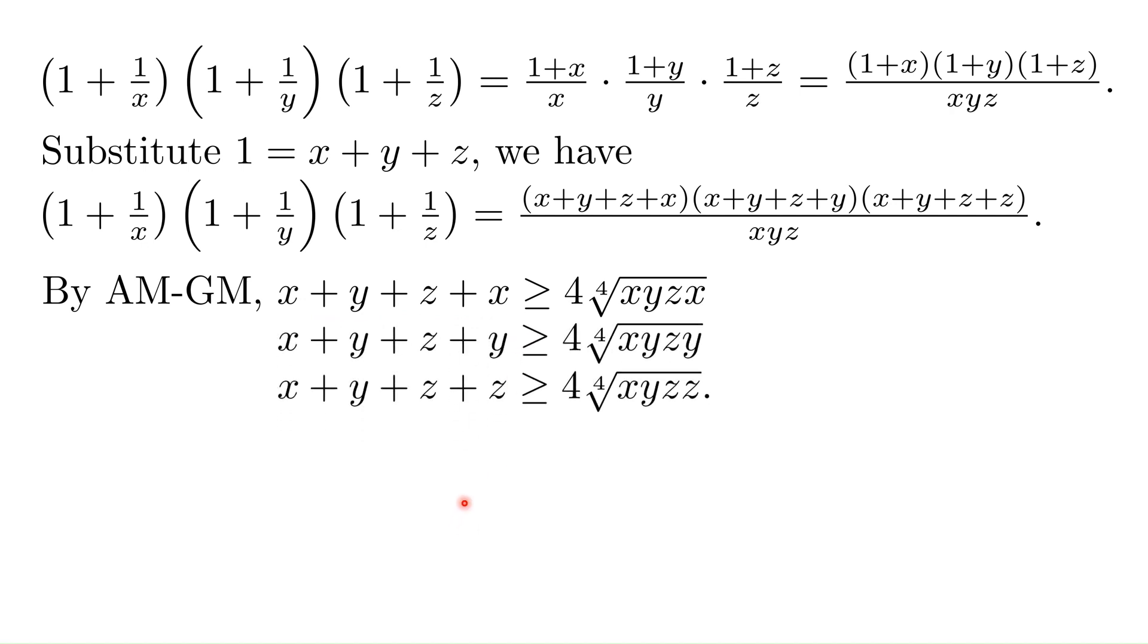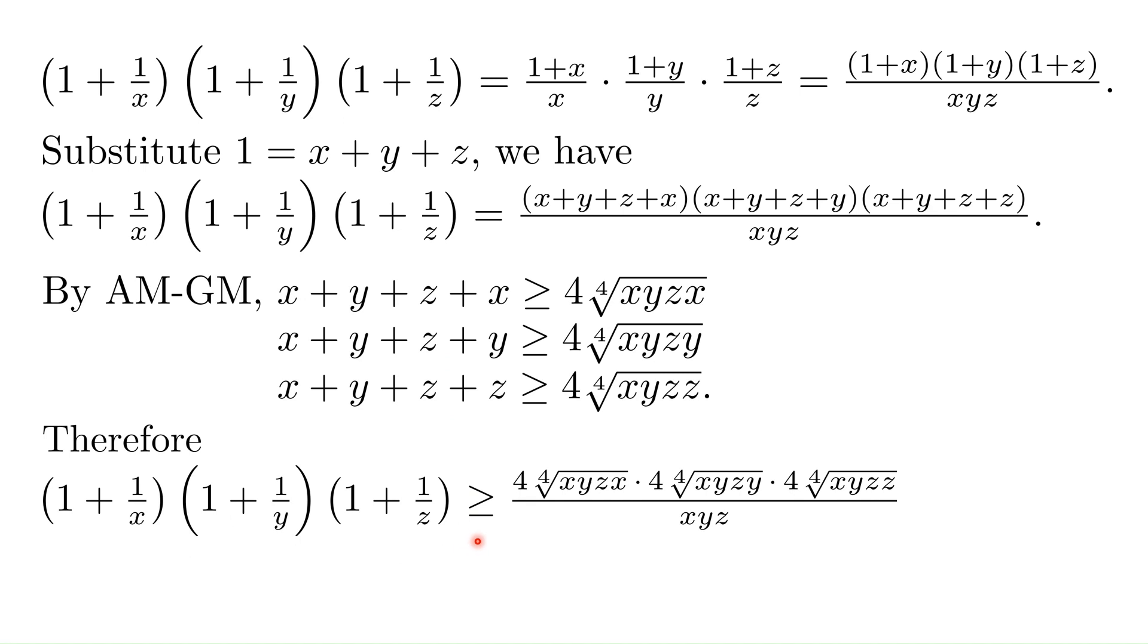Similarly, we have this AM-GM inequalities for the second sum and the third sum. And then we put everything together. The left hand side is greater than or equal to 4 times the geometric mean of the first four numbers times 4 times the geometric mean of the second four numbers and the third part.